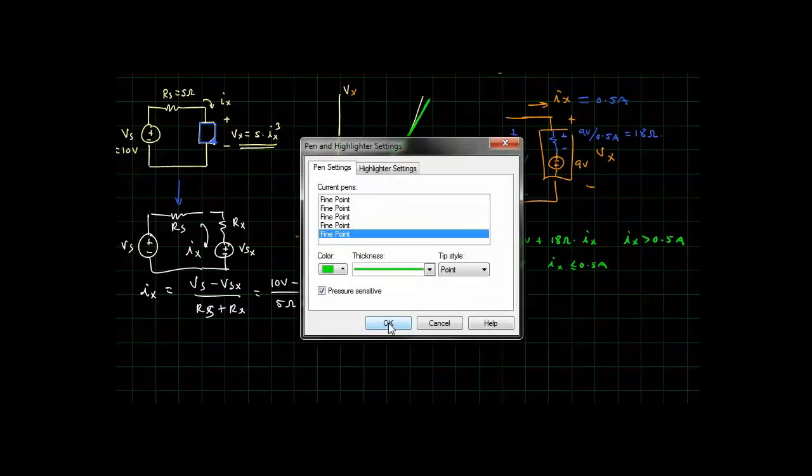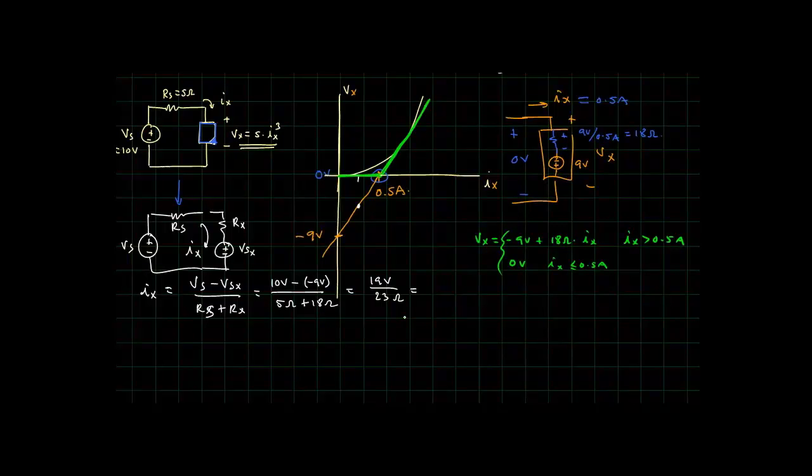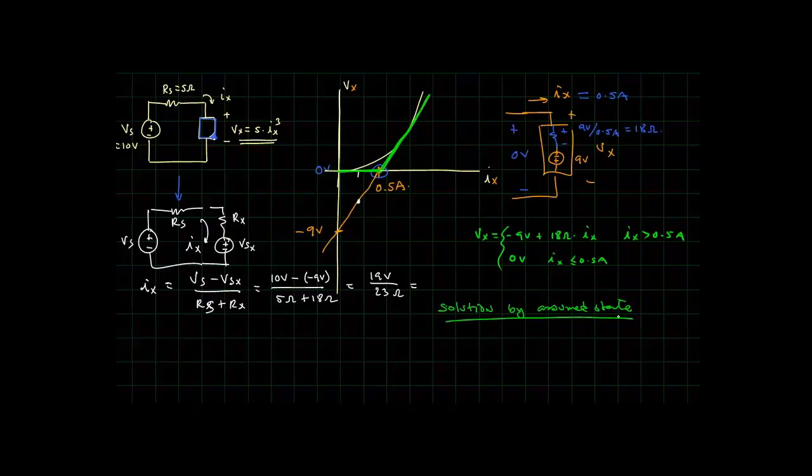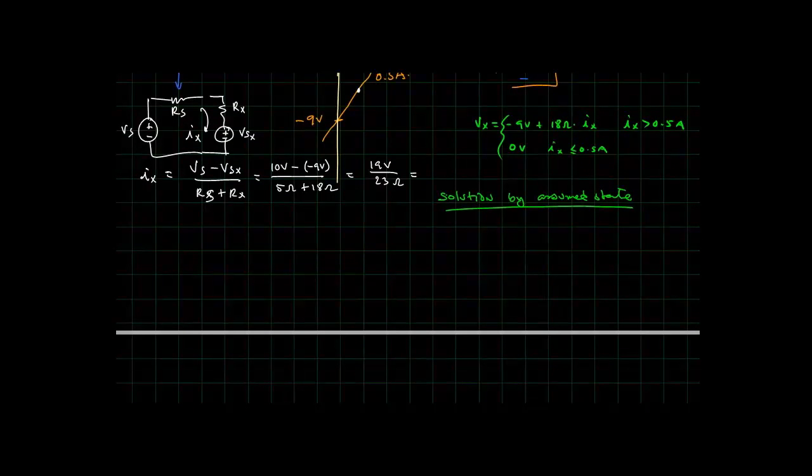Then the question comes up: if you have two possible models for your nonlinear device, then which one do you choose when you do a circuit analysis? Let's work that out. We'll use the technique called solution by assumed state. When we create a piecewise linear model for a nonlinear device, we basically have two states for our model. It could either be in the state that exists when the current is less than 0.5 amps, or it could be the state when the current is greater than 0.5 amps. The actual topology, the values of the elements for our piecewise linear model change. So we have to pick some values when we do analysis of the circuit, and we have to pick one or the other.